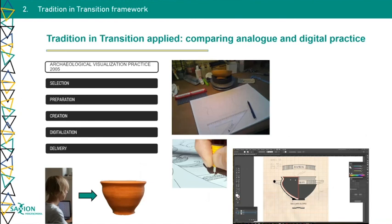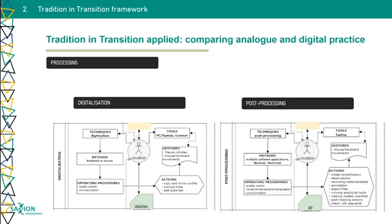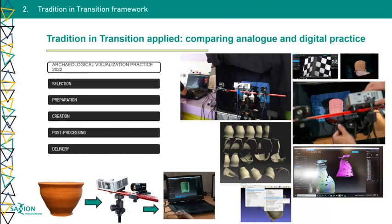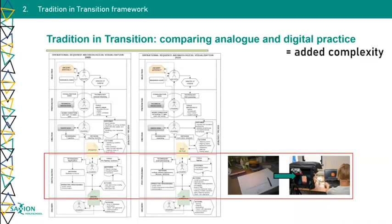I can visualize what happens in the scheme — you can see my analog process here, and then how it became much more complex, with way more actions, choices, and methods used. So in the practice, at some stages there is added complexity, but not a fundamental change of an entire practice.